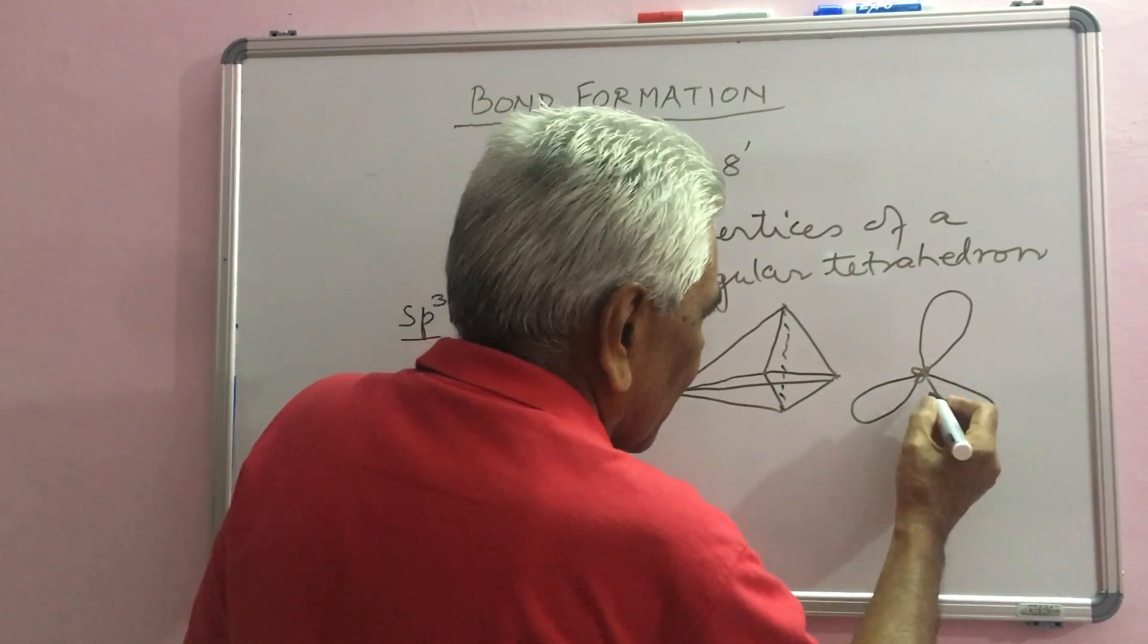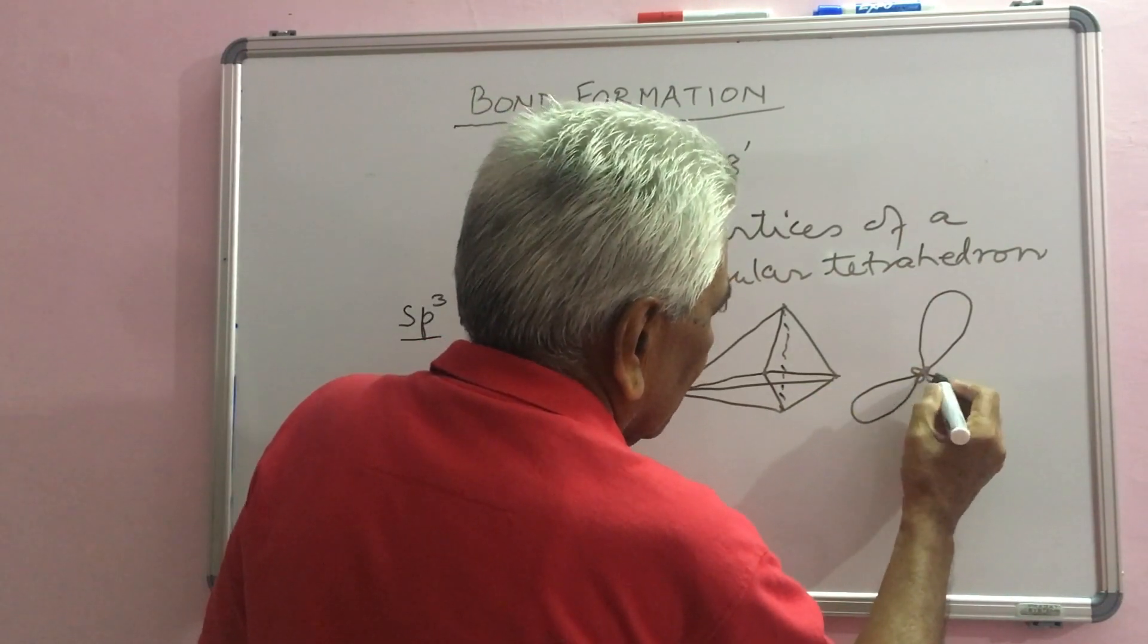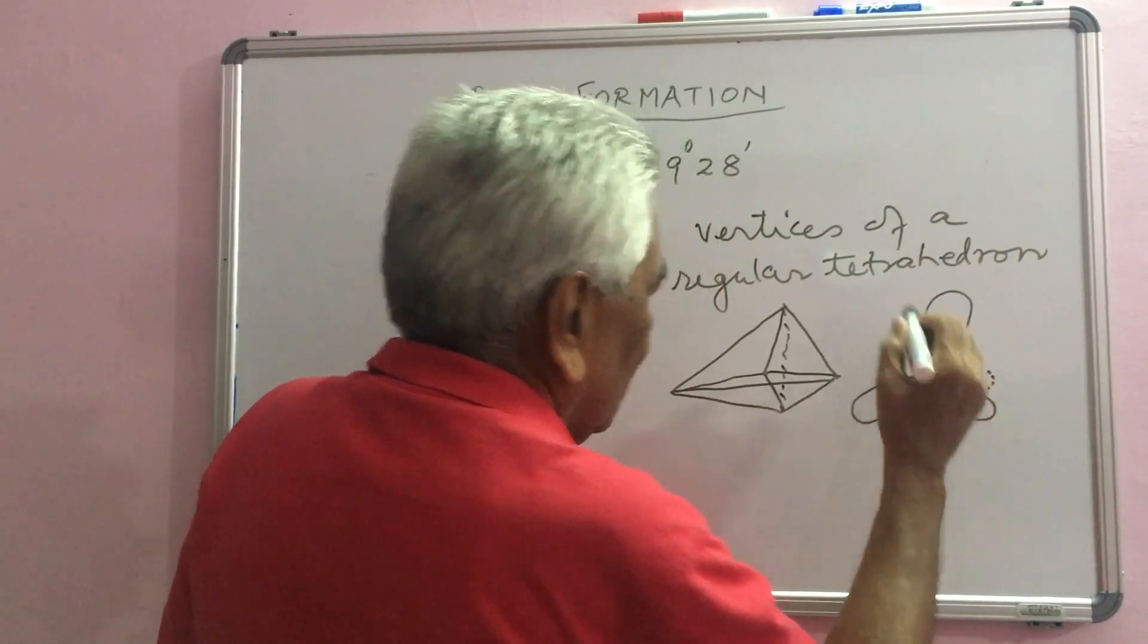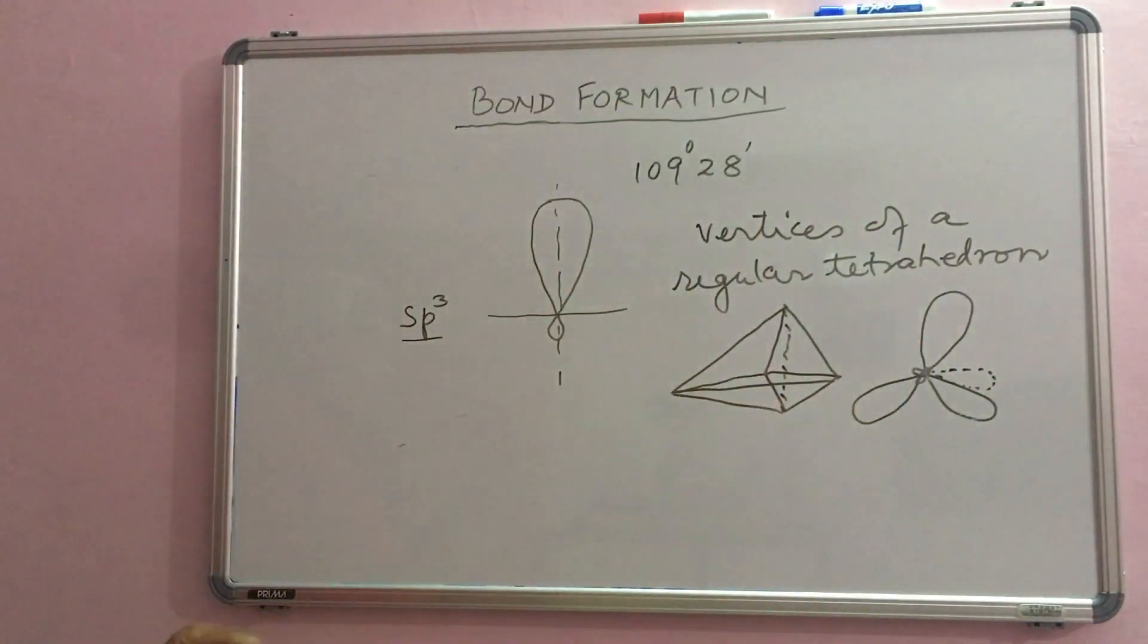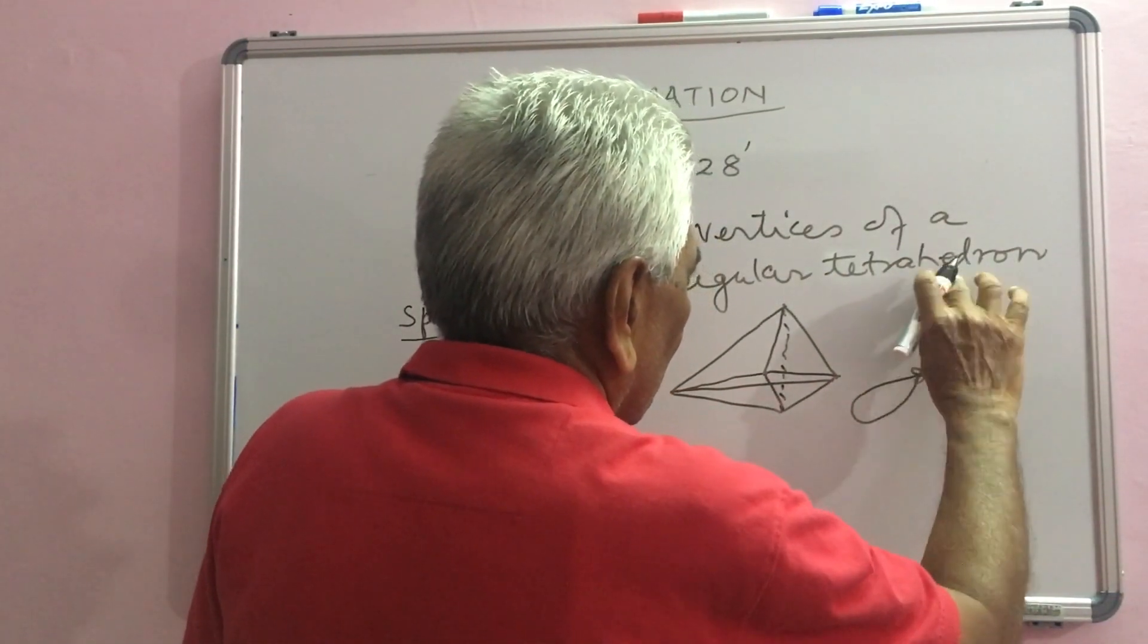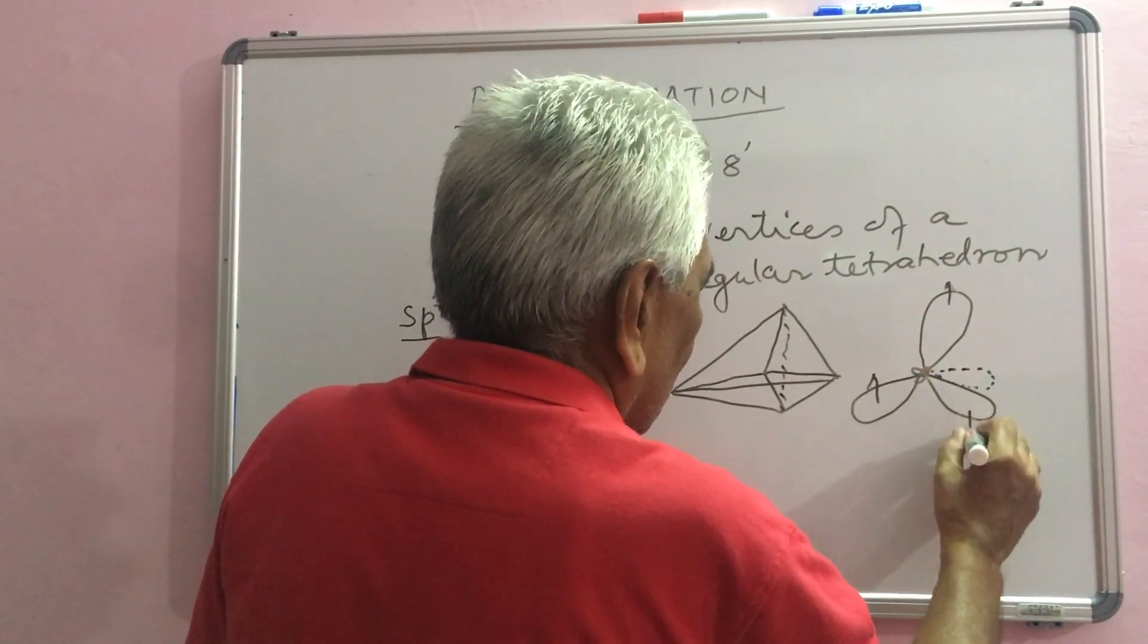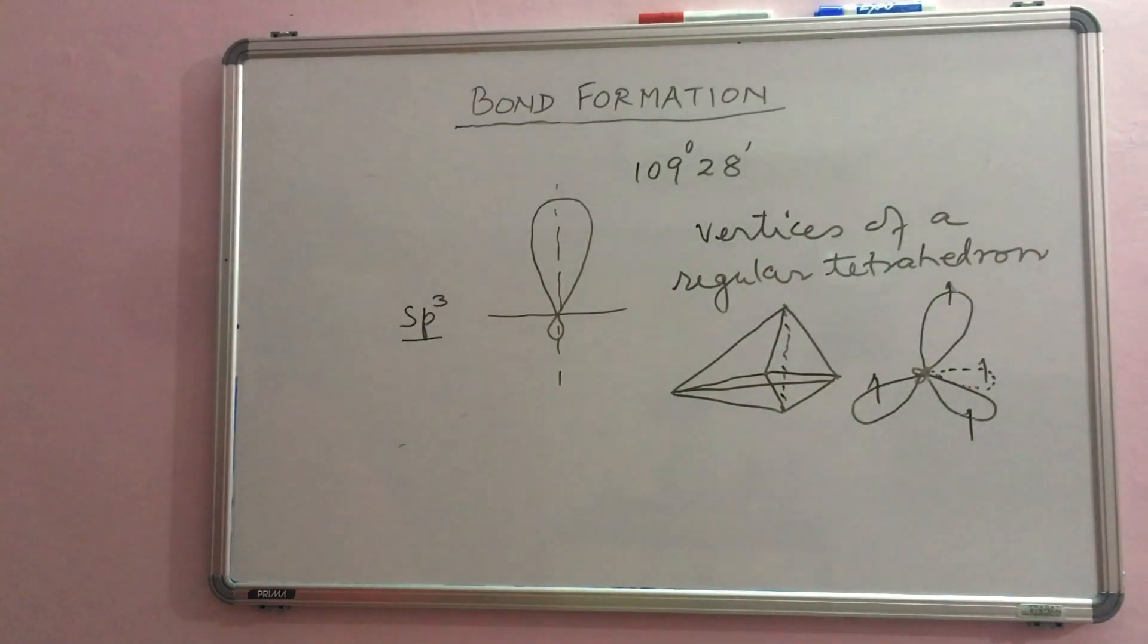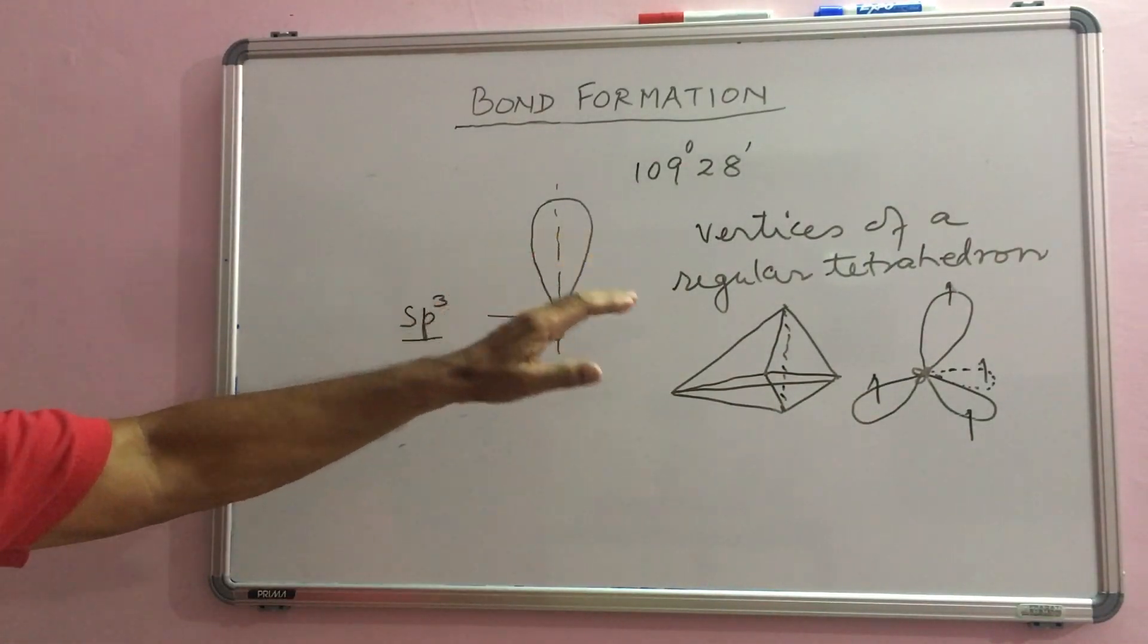And the one going back can be represented like this here. This is going backwards. Each has one electron now and is ready for bond formation.